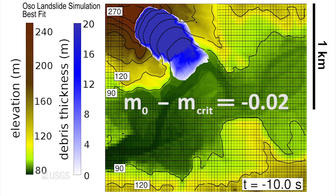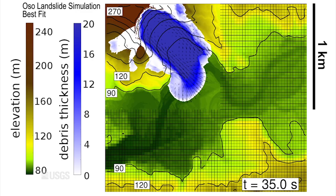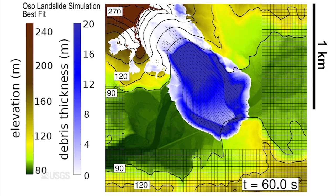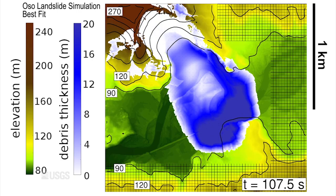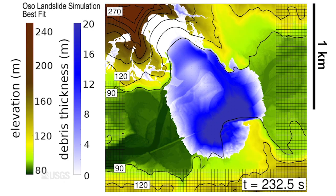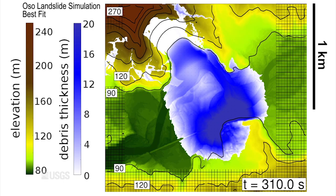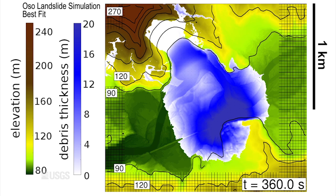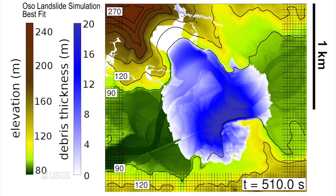Values of the parameters m0 and mcrit determine how sediment porosity changes during the early stages of landslide motion. Here, with m0 slightly smaller than mcrit, pore space declines, causing increased pore water pressure and decreased friction. As a result, a liquefied high-speed landslide crosses the 1 kilometer wide river floodplain in about 1 minute.